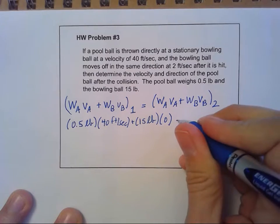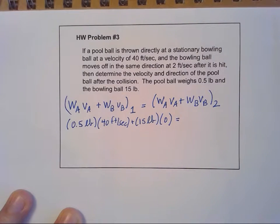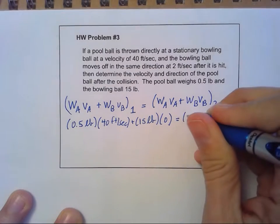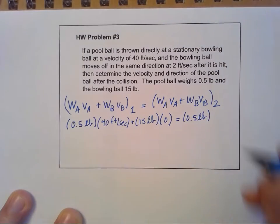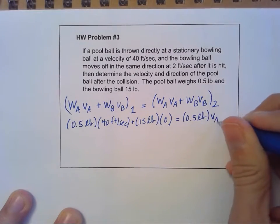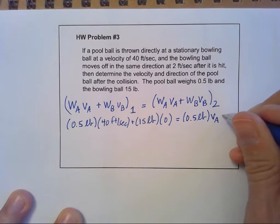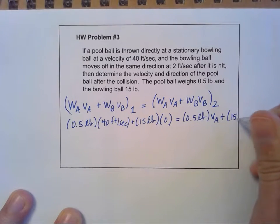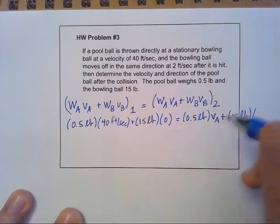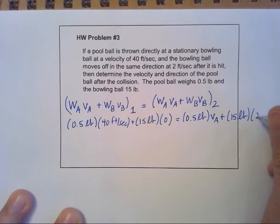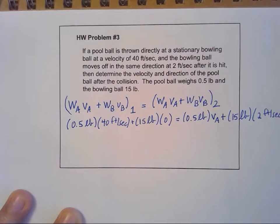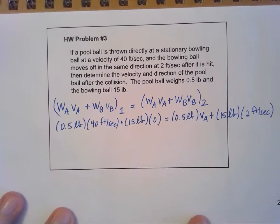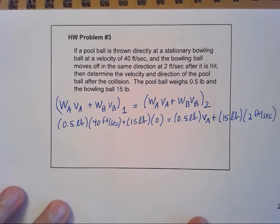Now I've got my after terms. Afterwards, everything stays the same weight. But we don't know what the velocity of the pool ball is, that's our unknown. And then we've got the weight of the bowling ball that's going to go off in the same direction as the pool ball came into it at two feet per second. So that's also positive. So I'm just leaving that without a sign, which means positive.